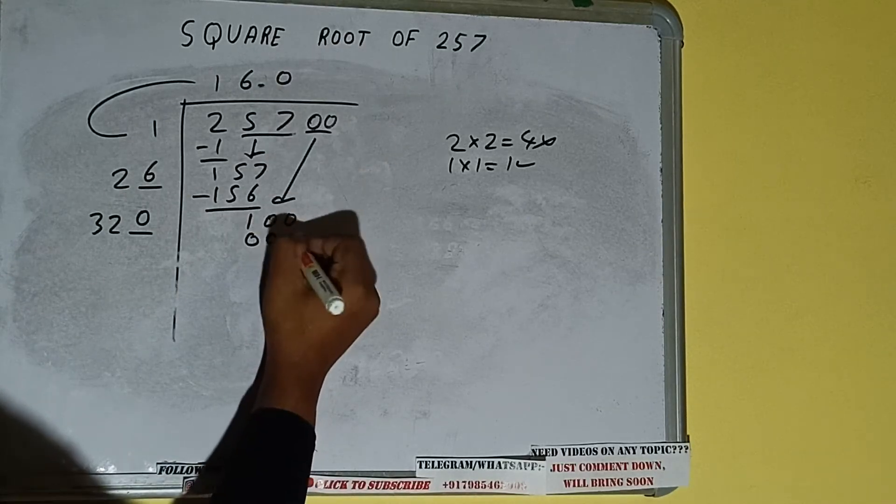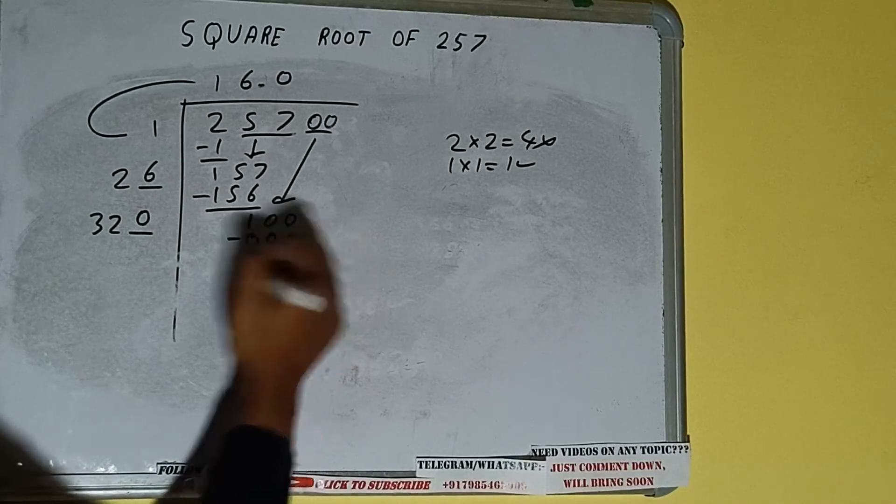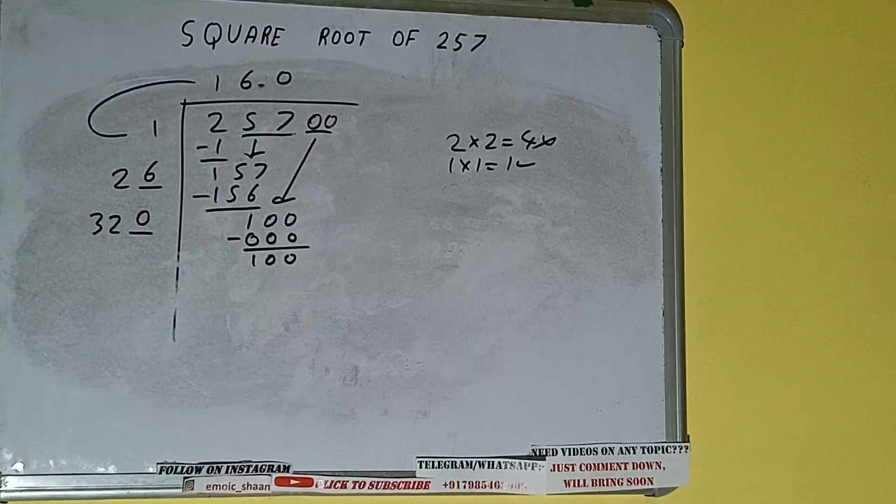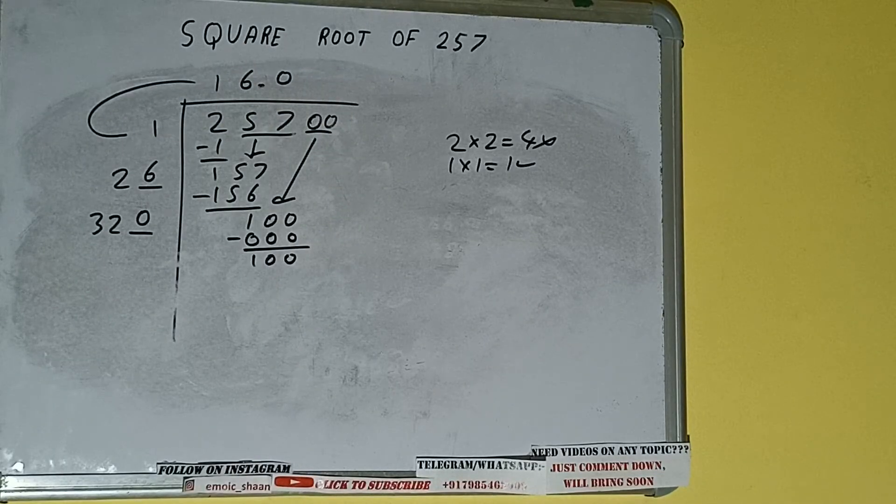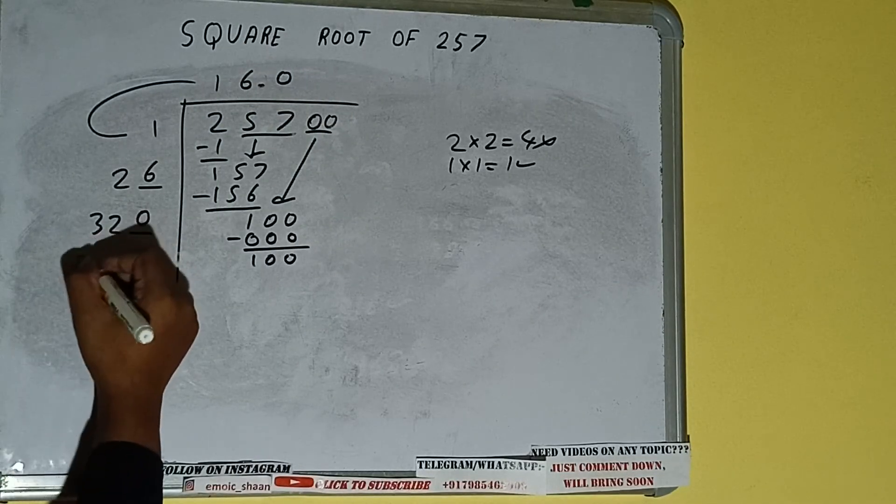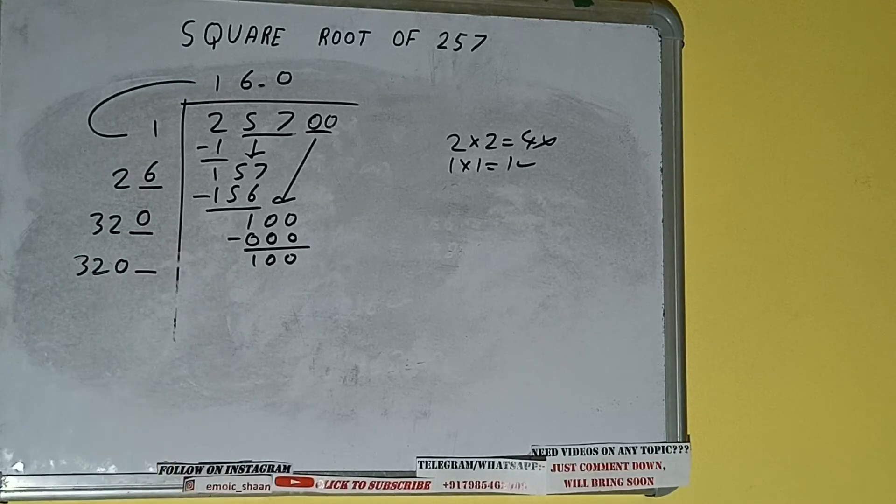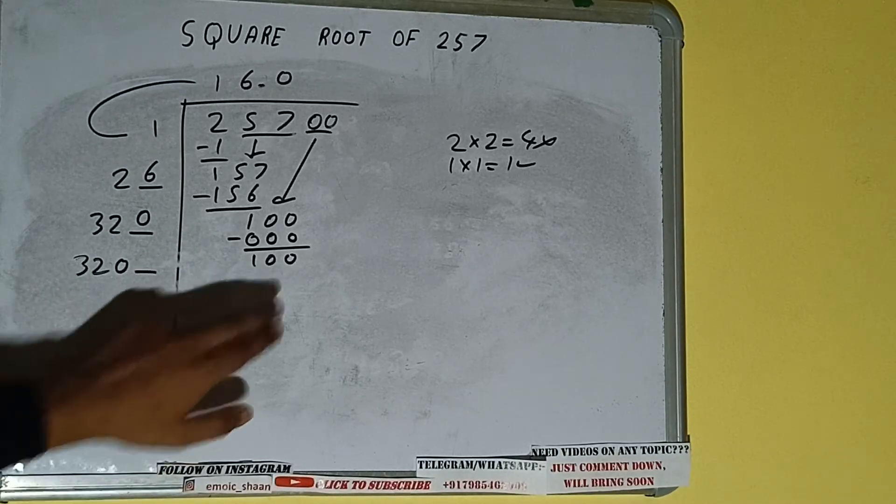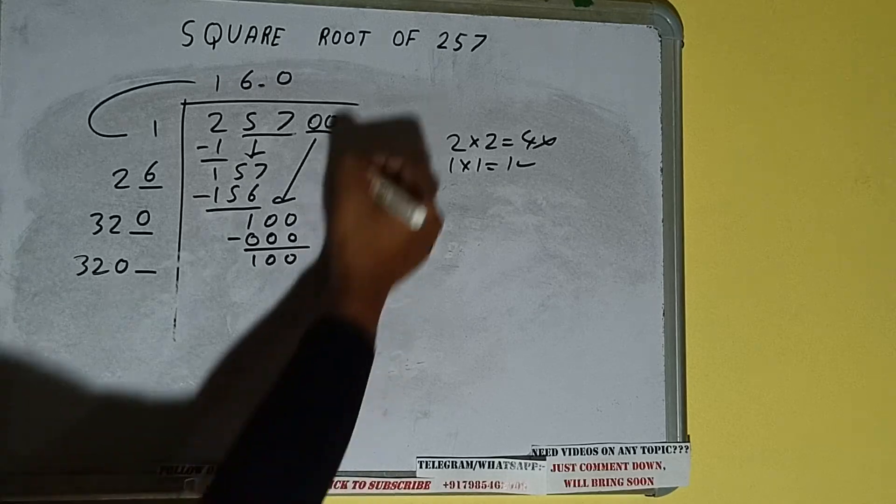Now we can write zero here and zero here, it will remain 100. Now 320 into zero we did, so add both. So 320 plus zero will be once again 320, but one digit extra. And this number we need to make it big.